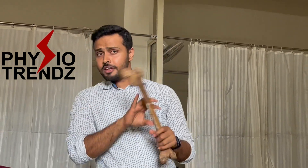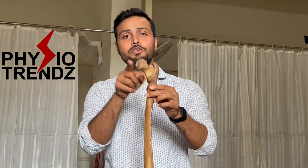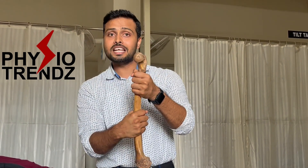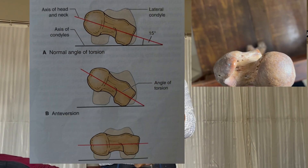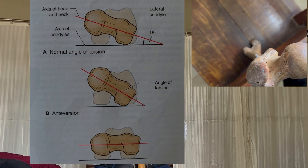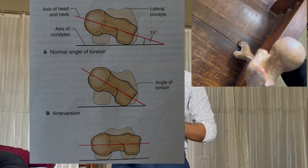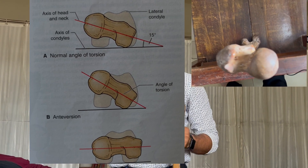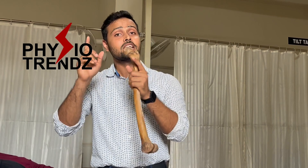My dear friends, we all have seen the femur and we know that there is an angle between the shaft and the neck of the femur. But also there is a torsion between the condyles and the head of the femur. That torsion is normally around 30 degrees when we are born — in children we can see that torsion is around 30 degrees — but as we grow, that angle comes down to between 8 to 15 degrees. If there is any abnormality in that, it can cause anteversion or retroversion.